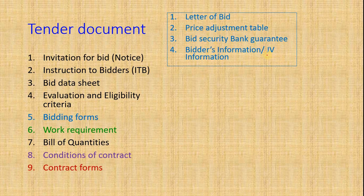Bidder's Information or JV Information contains details like the name, address, and year of constitution of the bidder or joint venture partners.